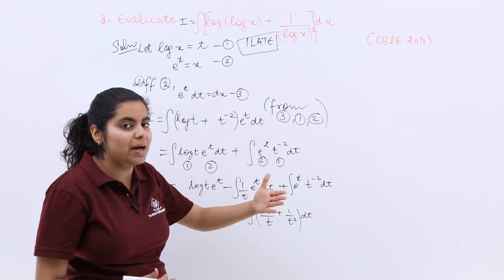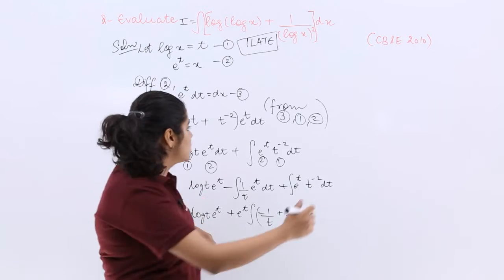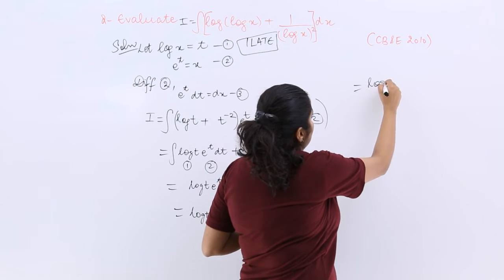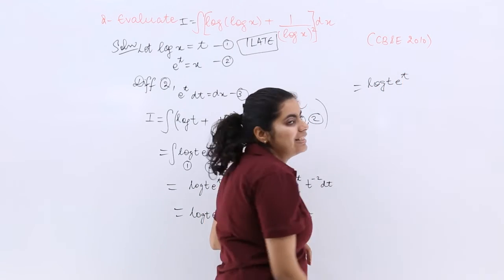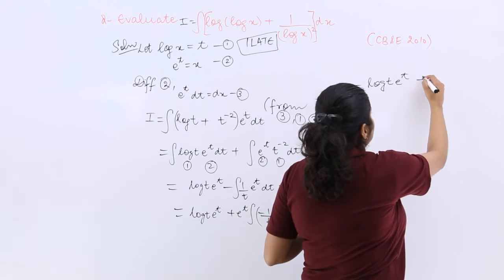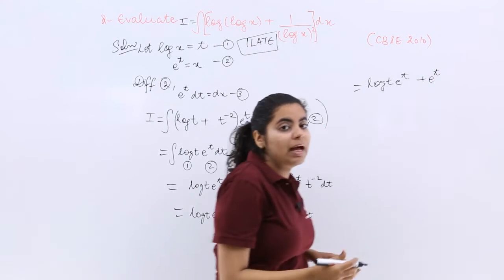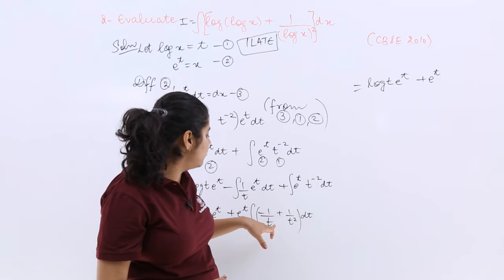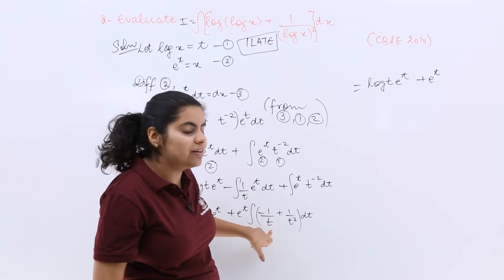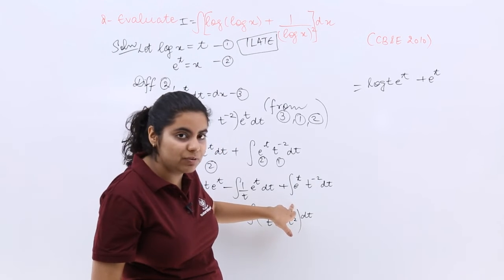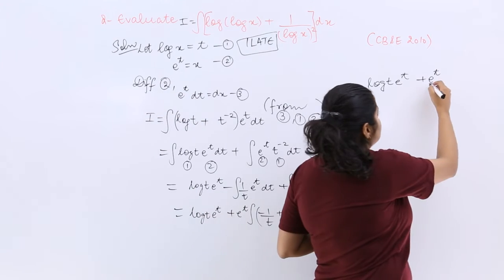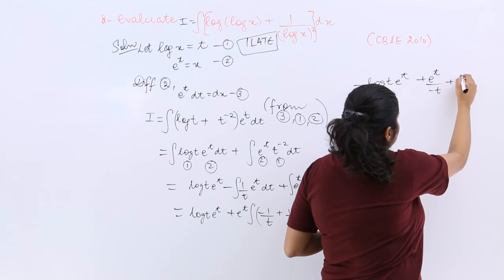So that would be the next step: log t times e raised to the power t then it is plus e raised to the power t multiplied by the function not the derivative. So what is the function if it is t raised to the power minus 1 the derivative is 1 by t square. So it is minus 1 by t then plus c.